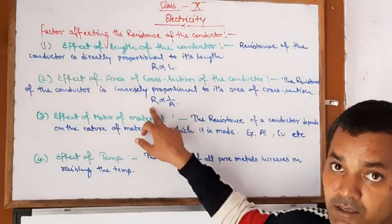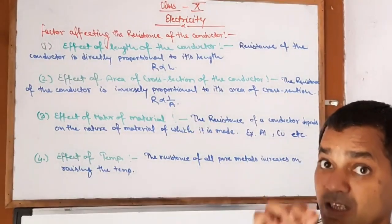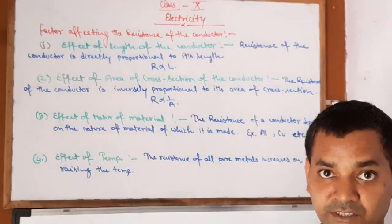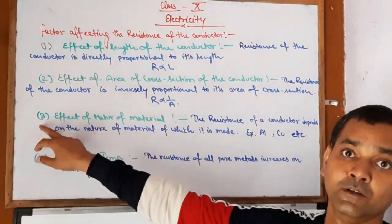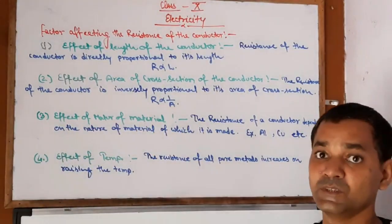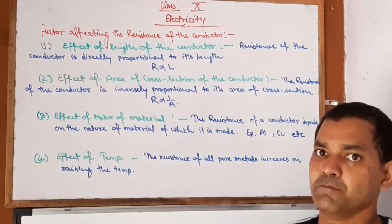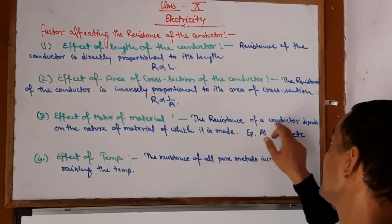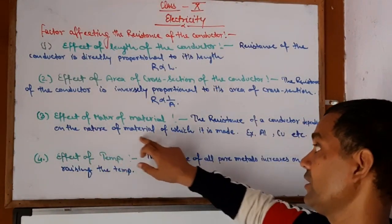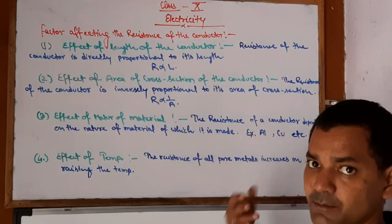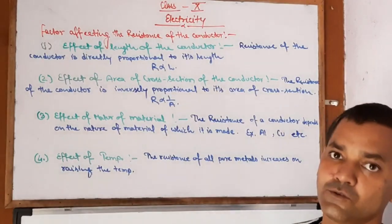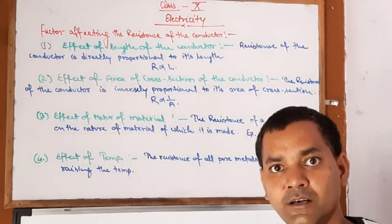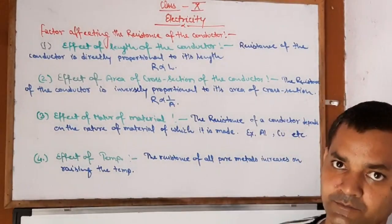Next point: effect of the nature of material. The resistance of a conductor depends upon the nature of the material of which it is made. For example, aluminum has a different resistance and copper has a different resistance. It is clear.